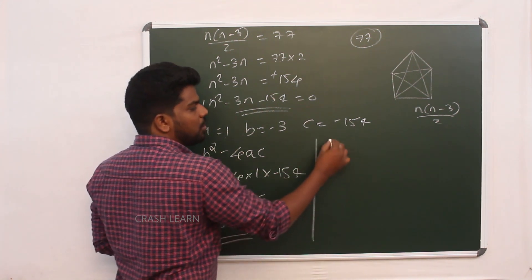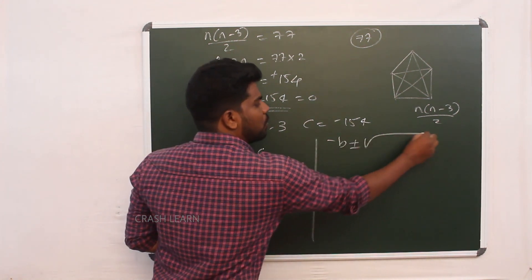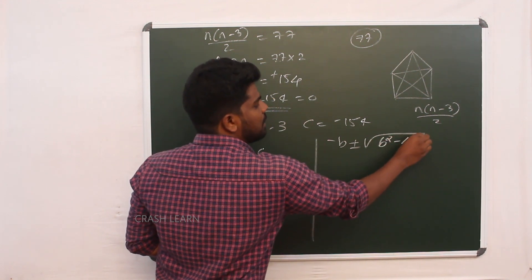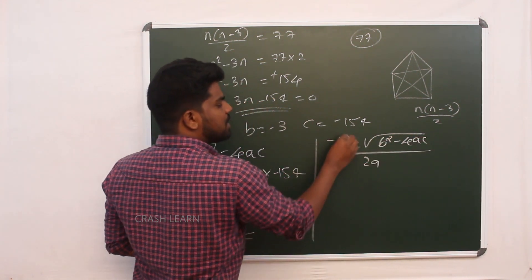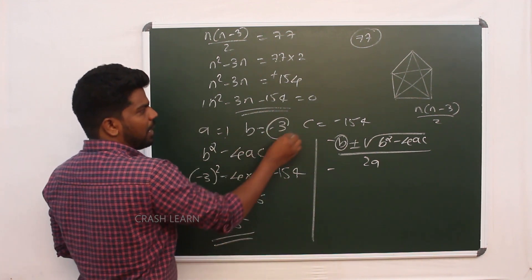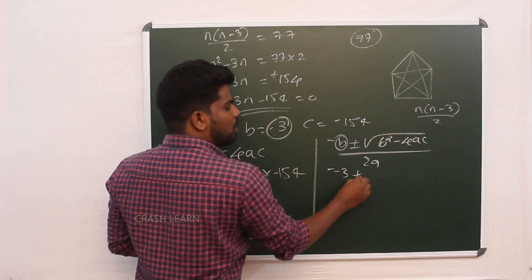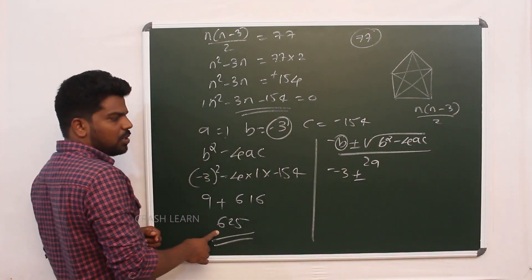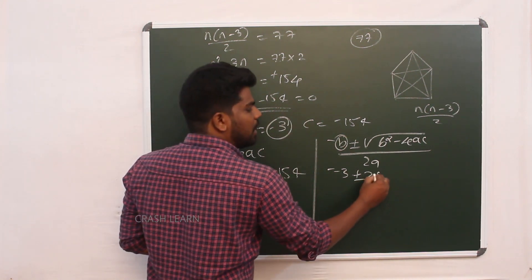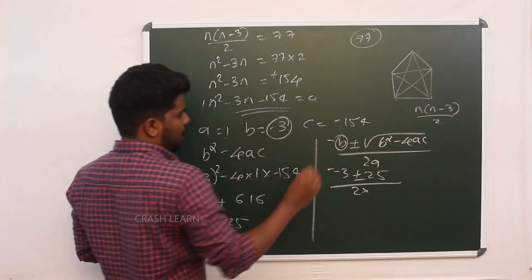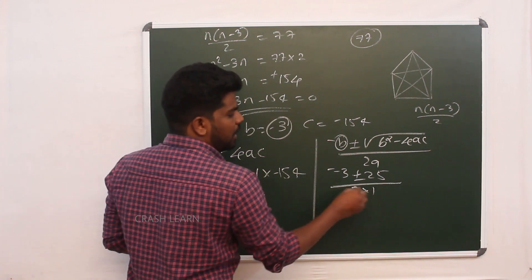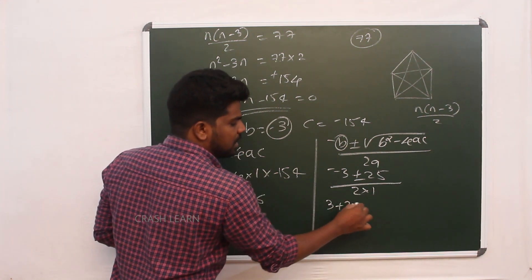We will take the equation. Minus b plus or minus root of b square minus 4ac by 2a. Minus b, b in the value minus 3, plus or minus b square minus 4ac. That is root of a is 1, 2 minus 8, 3 plus 20 by 2.